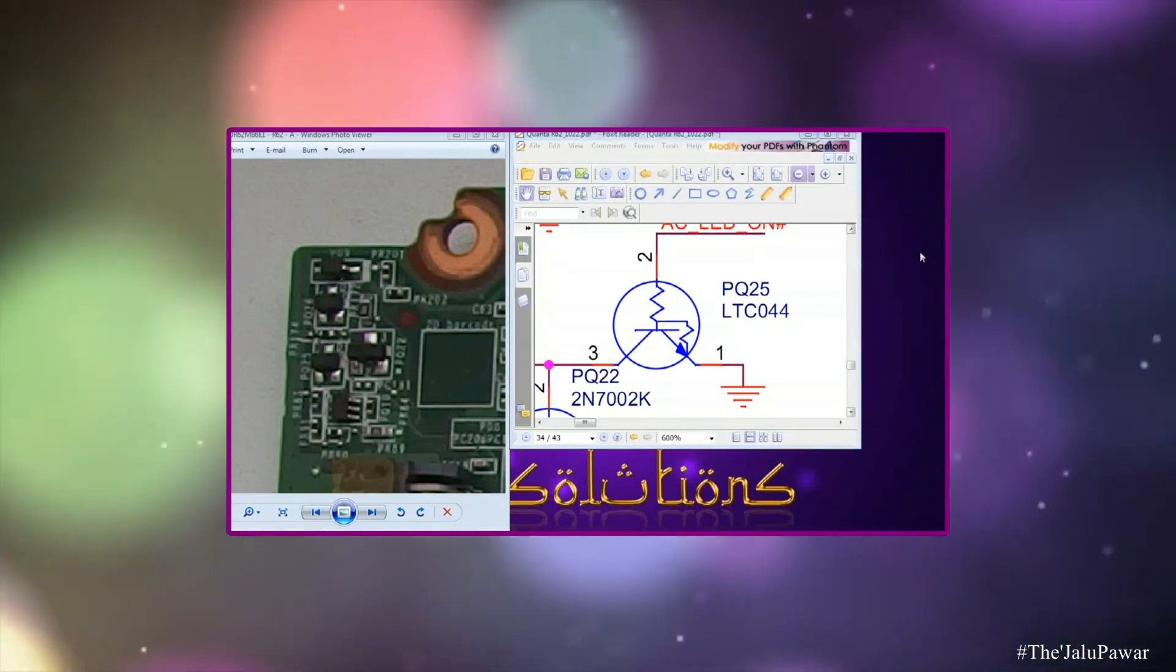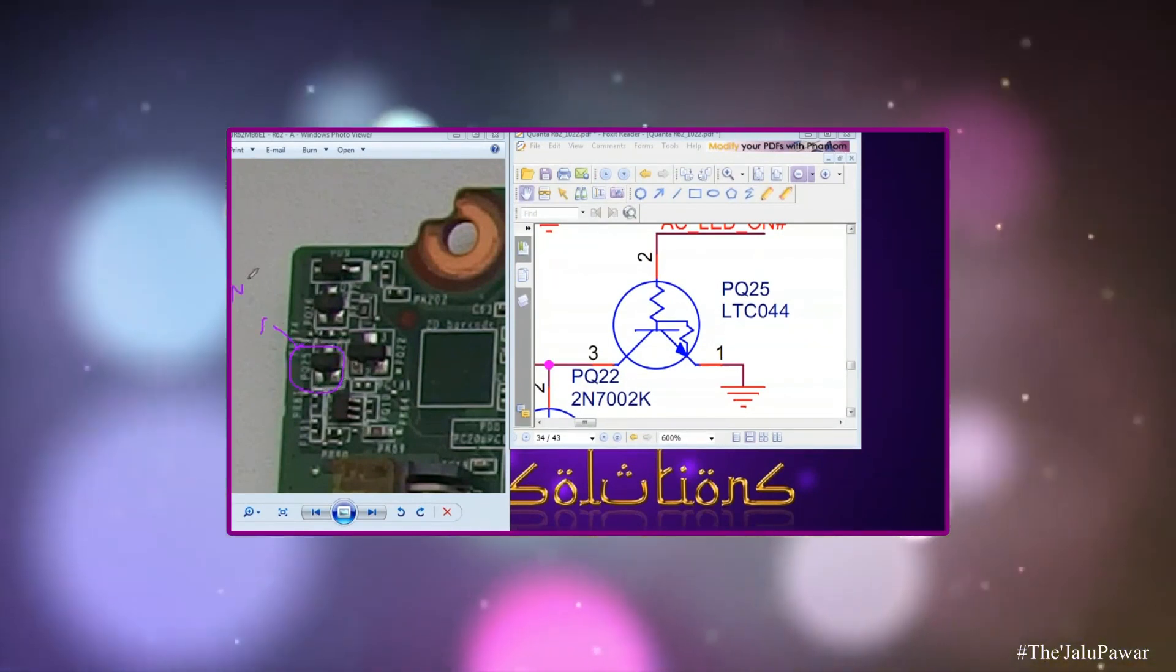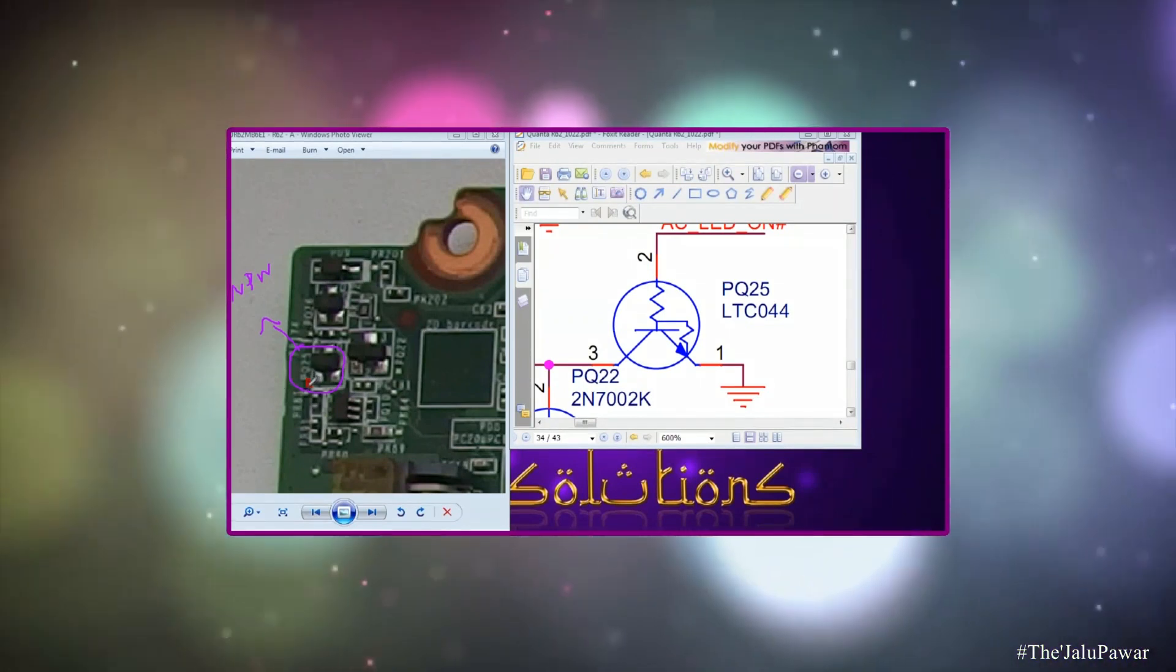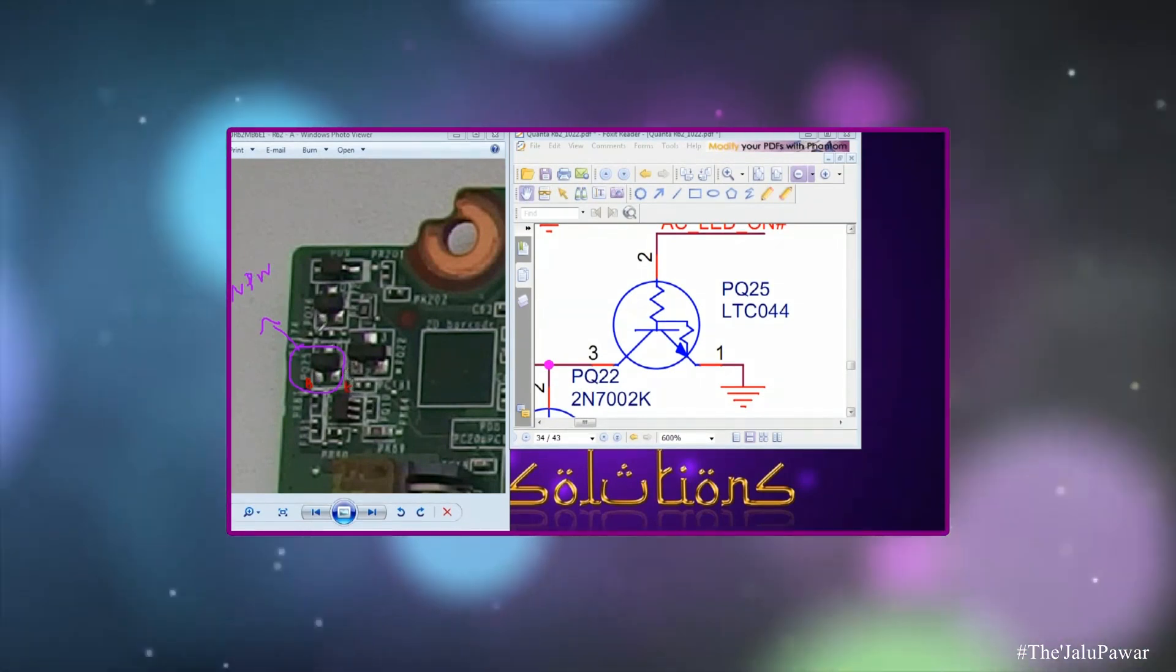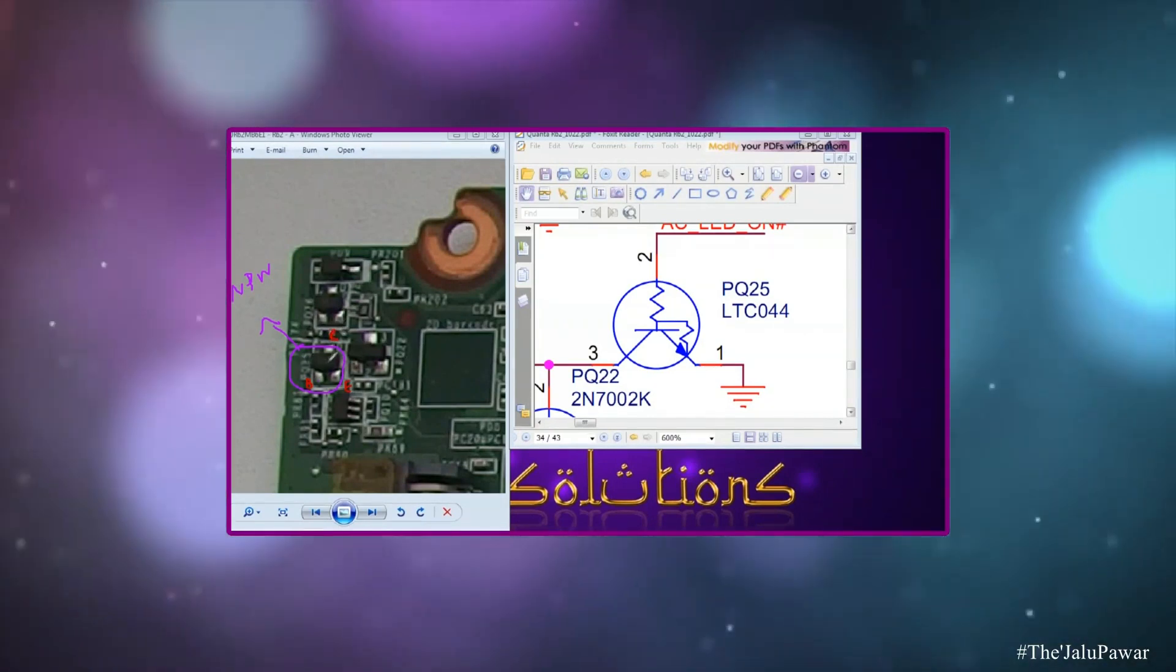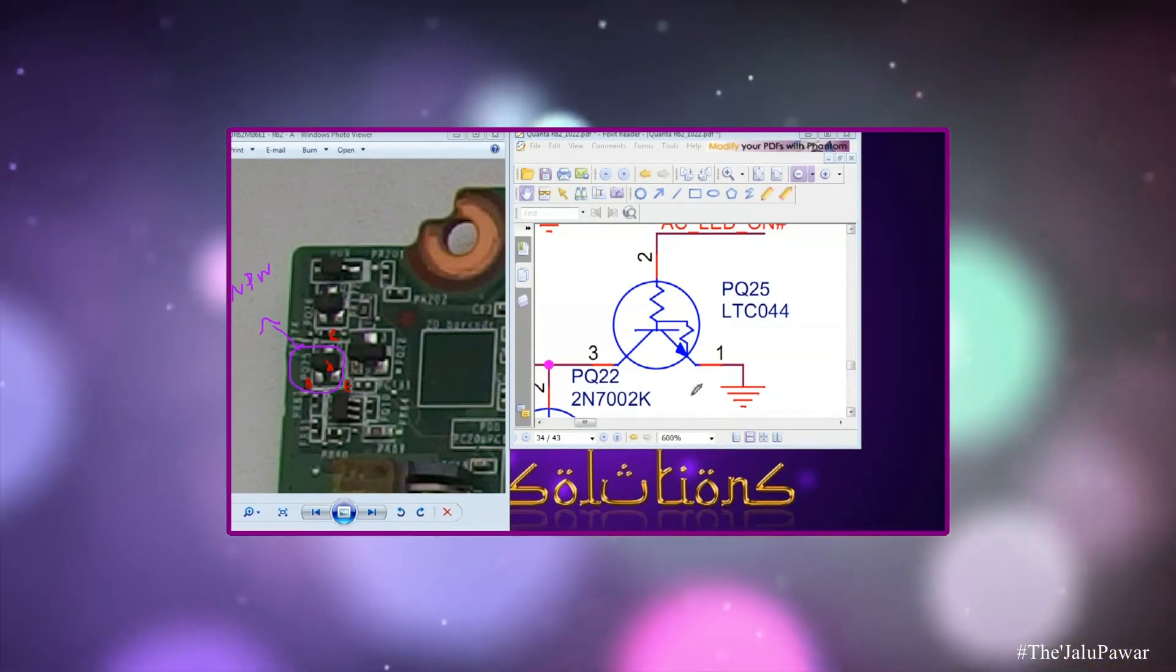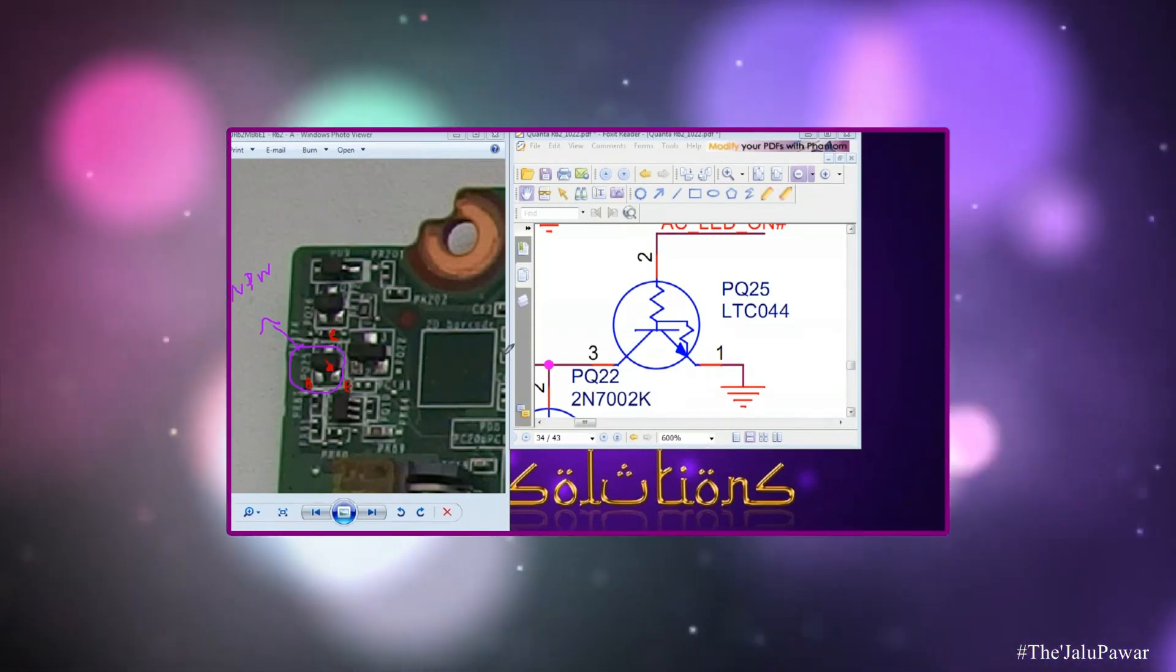This is PQ25. This is telling me arrow mark outside means it is an NPN transistor. And here also, it is trying to tell me that it is an NPN transistor. So, the left part is my base. This NPN means emitter and collector. Understood? Arrow mark outside. Correct? When arrow mark is outside, this is emitter.